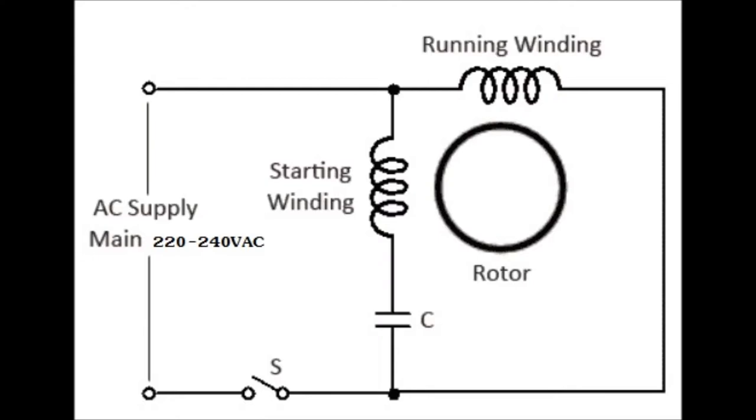Now let's consider the circuit arrangement with the capacitor, which is serially connected to the starting winding. When the switch is closed, the same 230 volt AC is entering the running winding and capacitor.